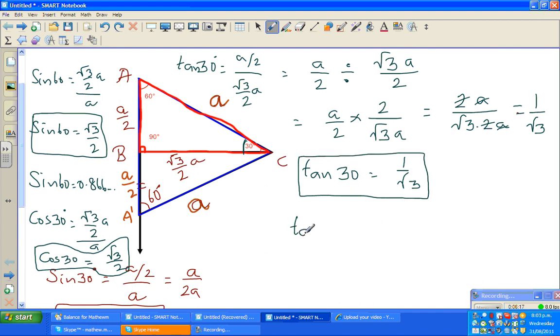Now tan 60° is—for this 60° angle, this is the opposite and this is the adjacent. So this is √3/2 times A divided by—this is opposite divided by adjacent—that is A/2.